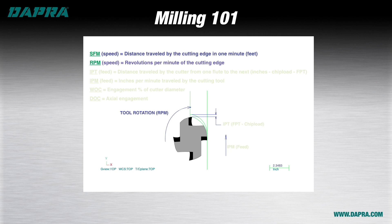The number that changes is the RPM, or revolutions per minute. This number is variable and it's dependent on the diameter of the cutting tool, so a larger tool will spin more slowly to move the cutting edge a given surface feet per minute. A smaller tool needs to spin more quickly to move the edge that same distance in the same amount of time. The calculations for arriving at the correct RPM based on the recommended SFM will be covered in another training video, so stay tuned for that.